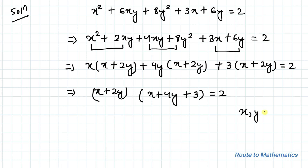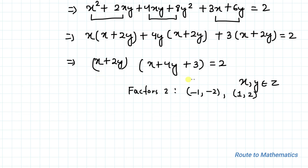Since x and y are integers, the right-hand side is 2. The factor pairs of 2 can be: (−1)(−2) or (1)(2). So in order to satisfy this equation, the two factors must take these values, giving us four cases to consider.